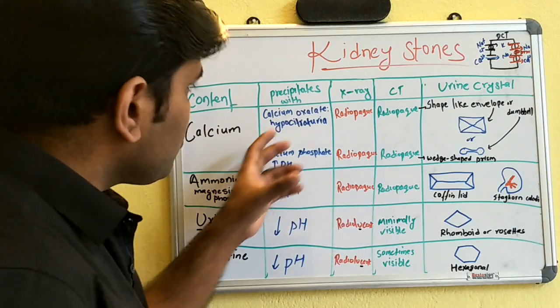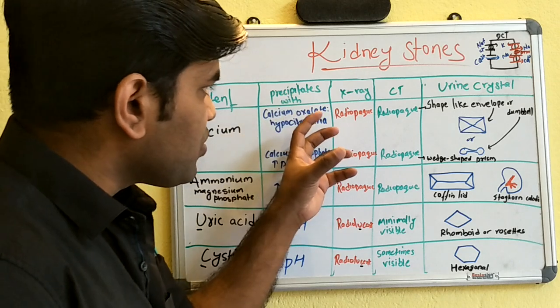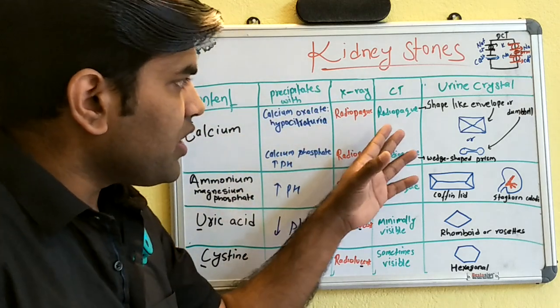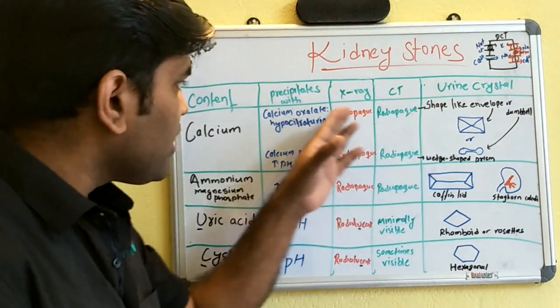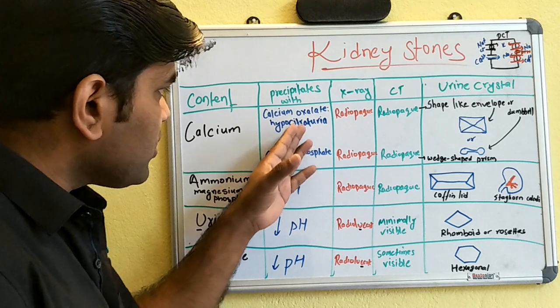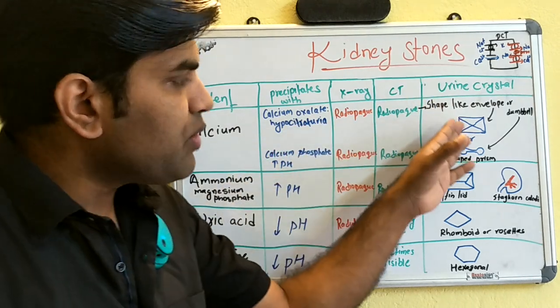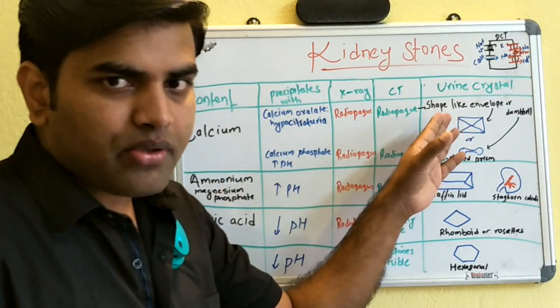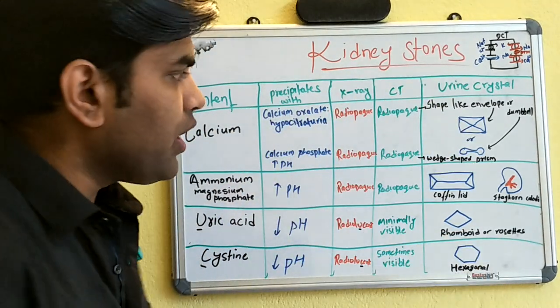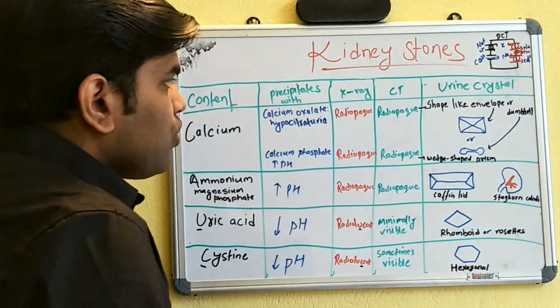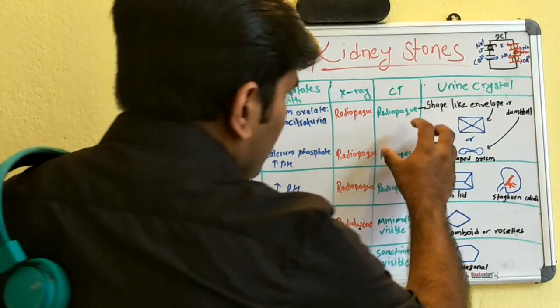To summarize calcium stones: both calcium oxalate and calcium phosphate are radio-opaque. You mainly have to understand the causes and the urine crystal shape that will be found to differentiate between them.